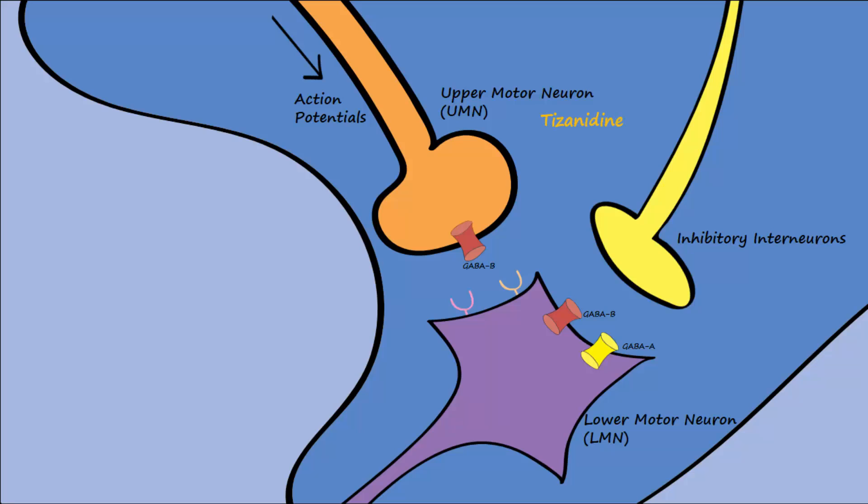Tizanidine is one of the drugs used for spasms associated with multiple sclerosis. This drug is an alpha-2 agonist and binds to UMN axon terminals and causes less release of excitatory neurotransmitter.